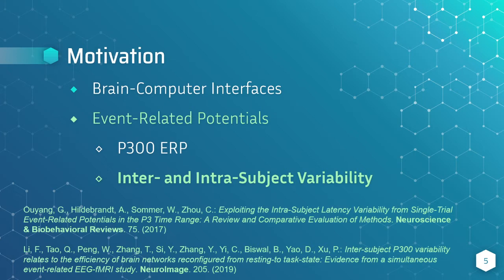The temporal spatial structures are variable. Spatial patterns used to appear in the posterior region of the brain, but they also appear in the central and frontal regions. Its temporal structure also changes from one trial to another, affecting its amplitude and latency. Therefore, identifying the variability can improve the precision and also the speed of communication of BCIs.